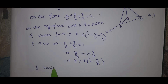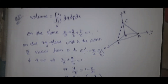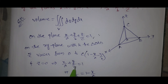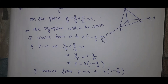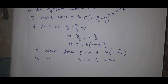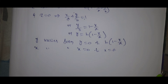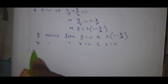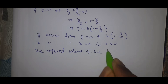Y varies from 0 to b(1 - x/a). Setting y = 0 and z = 0 in the plane gives x/a = 1, so x = a. Therefore x varies from 0 to a. We now have all the limits for the triple integral.